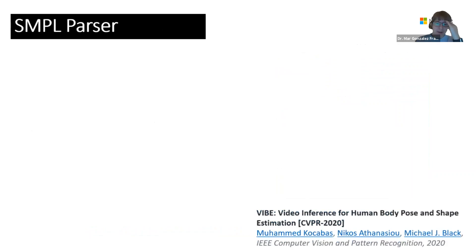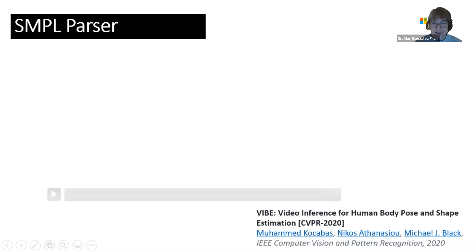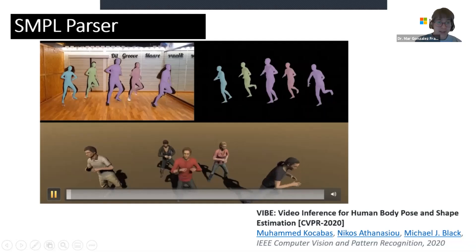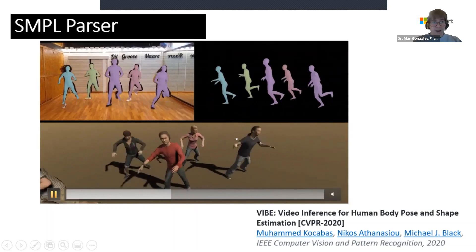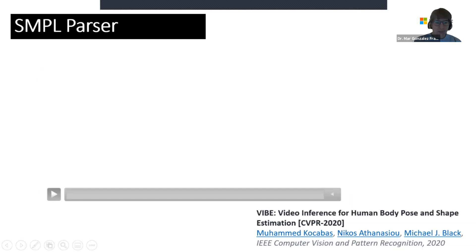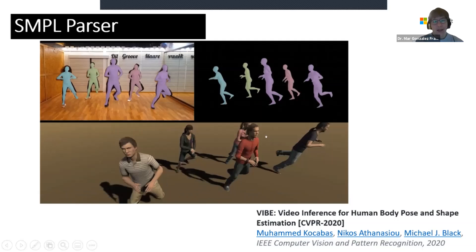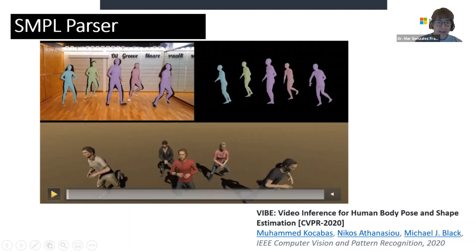Finally, we have the simple parser, which is best understood as something that connects the RocketBox avatar with other work like VIBE. VIBE is a video inference tool — you can use any YouTube video or prior archival footage, and it extracts the motions and body shapes of everyone on camera. It works pretty well when you have full bodies; it doesn't work as well when they're cropped, but this will improve. The interesting thing is that we can transfer all of that very nicely to the avatars.